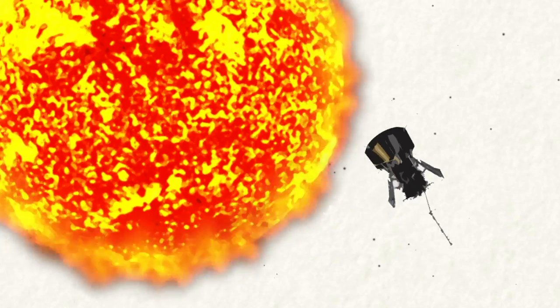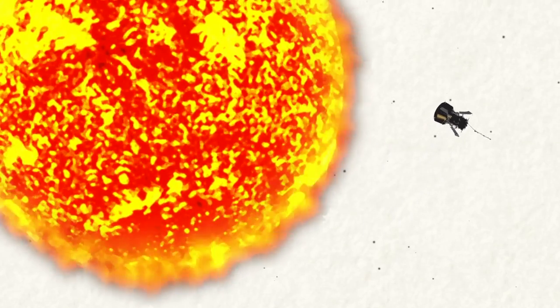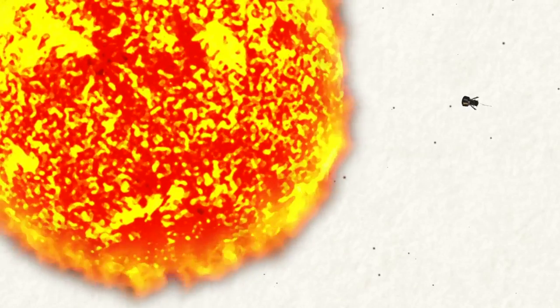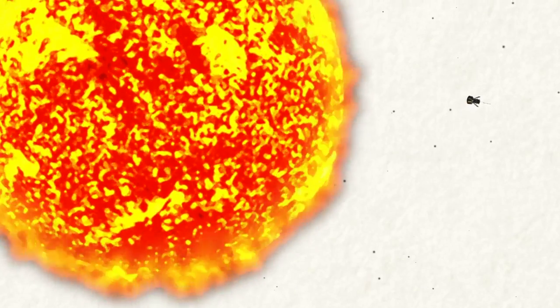NASA's Parker Solar Probe will soon fly closer to the Sun than any spacecraft before it, about 4 million miles from the visible surface. But getting that close to the Sun requires some fancy orbital mechanics.